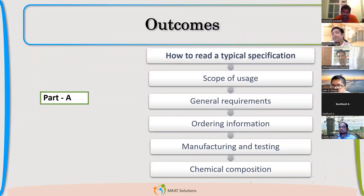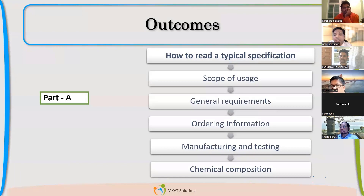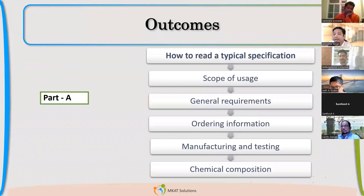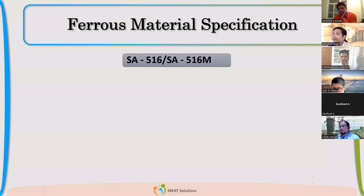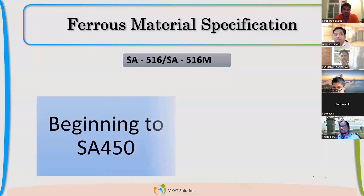When you open any material specification in Part A — for example SA-516 — you will see lots of information, starting from the scope of uses. Typical things covered include: scope of uses, general requirements, ordering information, manufacturing and testing requirements, chemical composition, and mechanical properties. Mechanical properties mainly cover yield and tensile strength. Allowable stresses are given in Part D.